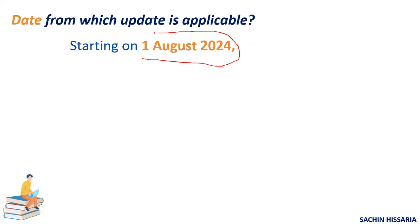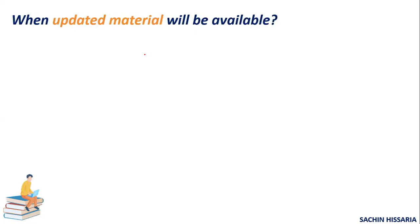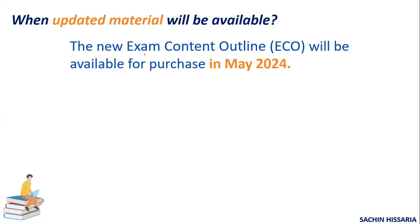Anyone appearing for the examination on or after August 1, 2024 will be examined as per the new syllabus. So if you are planning to take CISA in the next couple of months, I would suggest appearing before August 1, 2024 if possible — otherwise you will see some changes in the syllabus. You might be thinking: what exactly are those changes? That has not yet been published by ISACA.